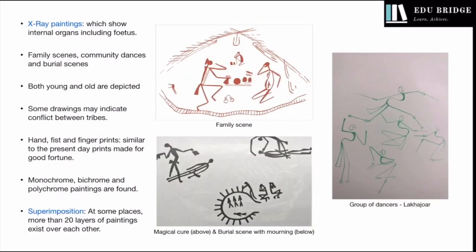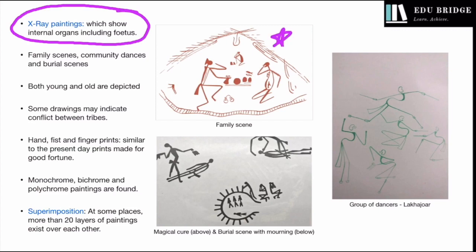Another very important feature of the Mesolithic paintings at Bhimbetka is the use of x-ray painting, meaning that the body's internal organs are also visible in the paintings, including a fetus. In one family scene painting, a pregnant woman is depicted with a fetus shown inside her body, food is being prepared, and a child is eating in the background. Apart from this, community scenes also became common, such as family scenes, community dances, and burial scenes.